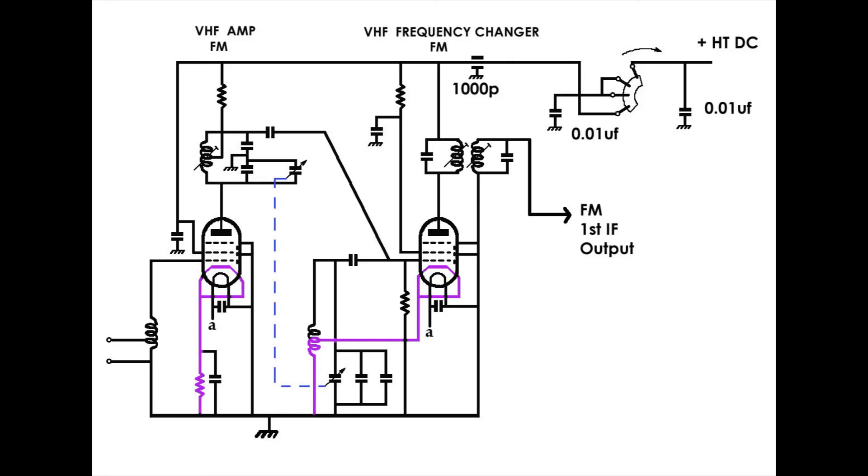When I first started getting involved with valves I had a real problem understanding negative bias. In order for the valve to function correctly, the grid of the valve, that's the control grid, the first one working up from the bottom, has to be negative relative to the other components.